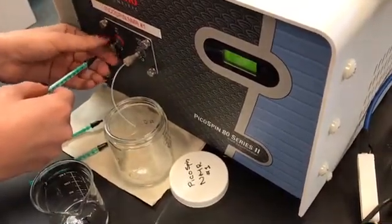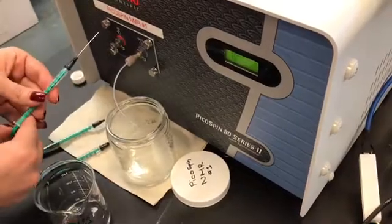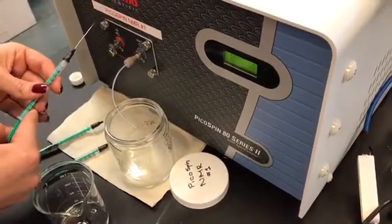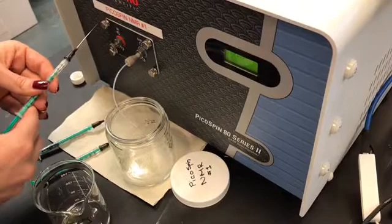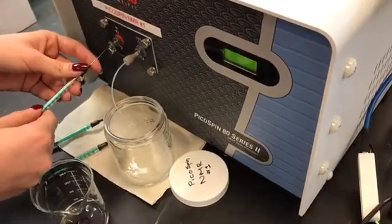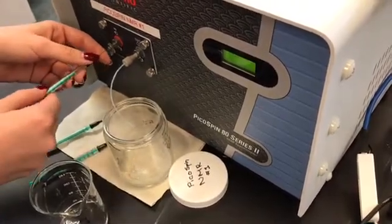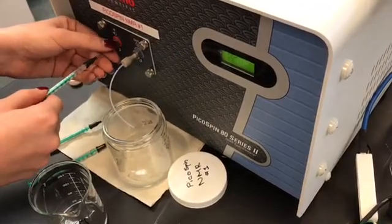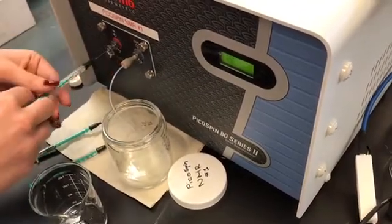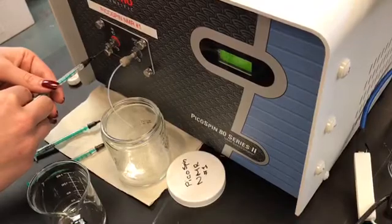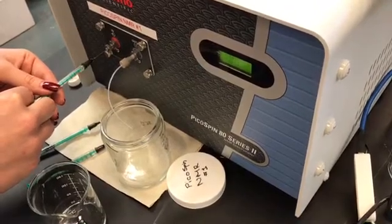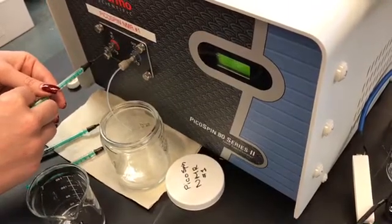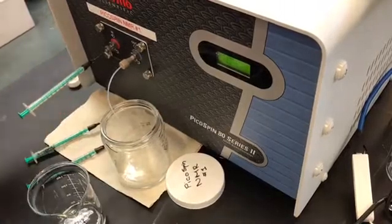We're going to loosen the screw and repeat this one more time. So we're going to withdraw air, insert it until it stops, tighten the screw, and once again inject the air, and we're going to leave the air syringe in the inlet port.